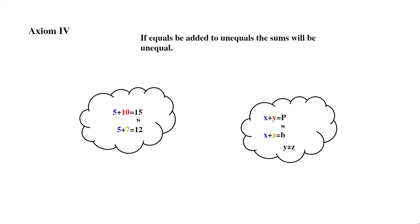Axiom 4: If equals be added to unequals, the sums will be unequal. For example, 5 plus 10 equals 15, and 5 plus 7 equals 12. 15 does not equal 12, so 10 does not equal 7. If p does not equal b, then y does not equal z.